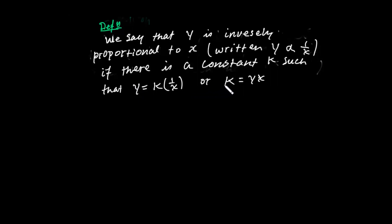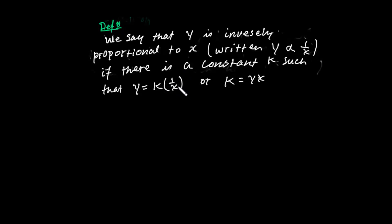So k equals y times x. The constant of proportionality is the product of y and x. When y equals k times 1 over x, which is k over x, y and x are inversely proportional to each other.